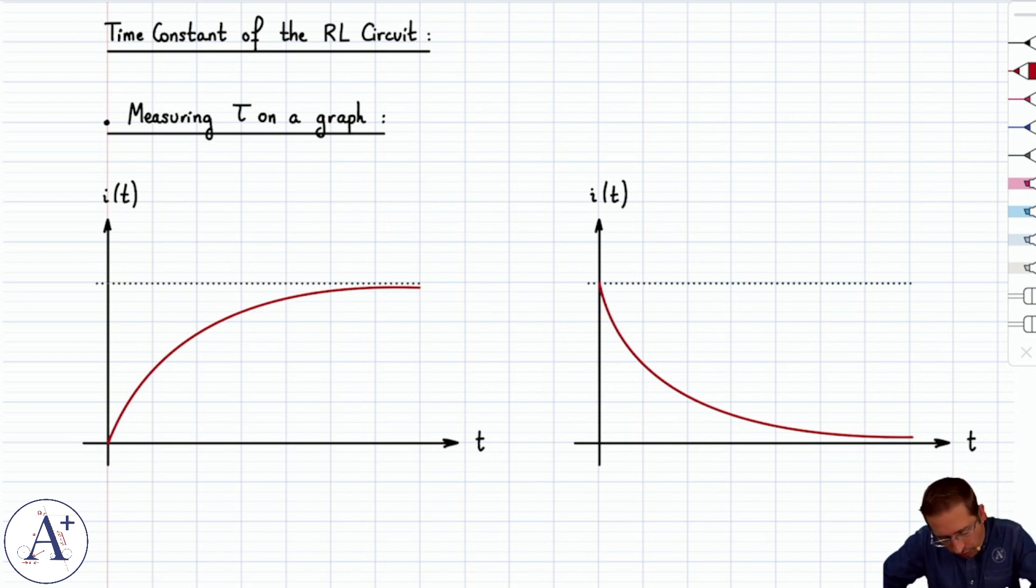So first things first, recall that tau, the time constant for the RL circuit, is equal to the ratio L over R, and what tau is is an order of magnitude of the duration of the transient state.